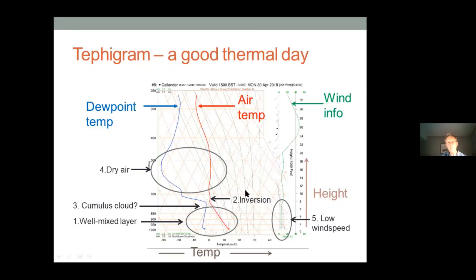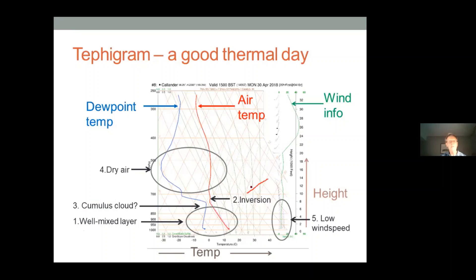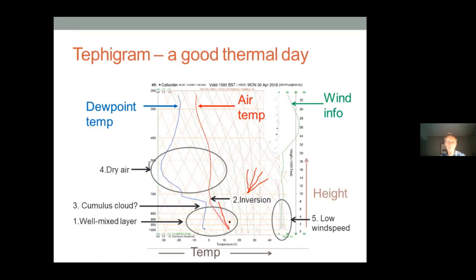You can also see it's a well-mixed layer because the dew point line isn't squiggling all over the place — there's just a small kink at the bottom where all the moisture concentrates near the surface. Above the well-mixed layer you want an inversion — a stable layer that stops the thermal climbing too much. If the inversion is too low, say 1000 feet, that's the height thermals go to and that's not great. These stable layers will stop over-convection; you want it high enough to give a good soaring height.